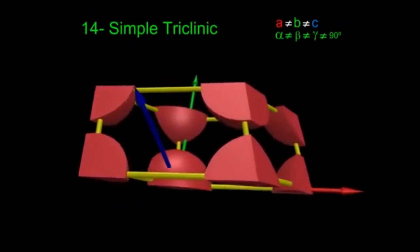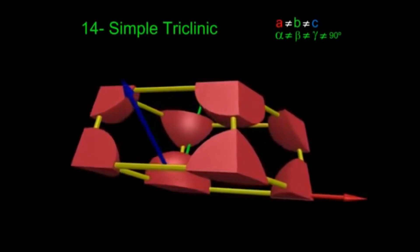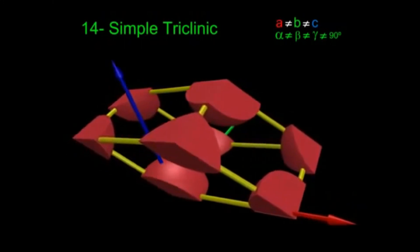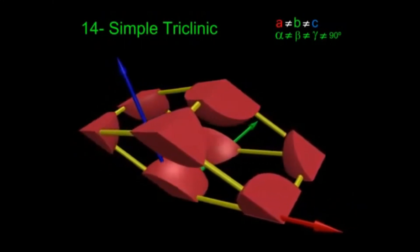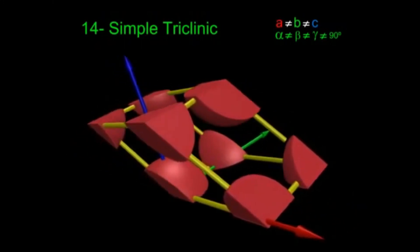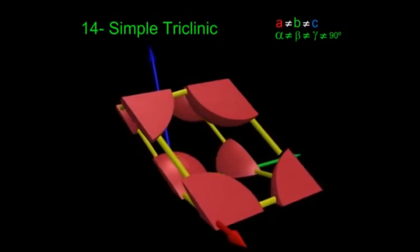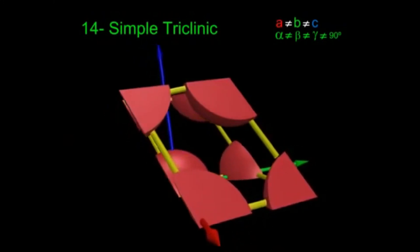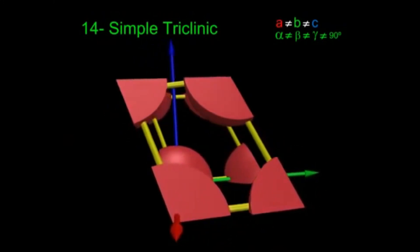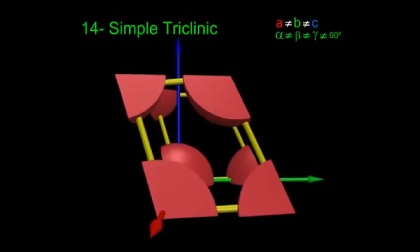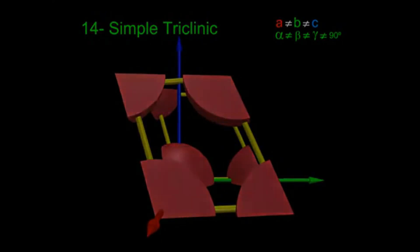So these are the 14 possible Bravais lattice structures. Whatever solid it may be, it contains only one of these types of structures. These are the only possible structures — this concludes the first part.